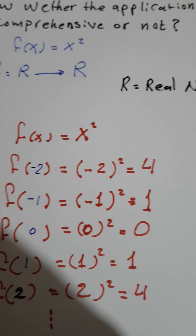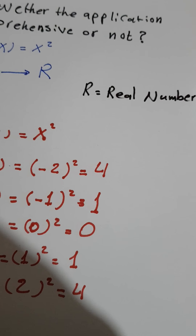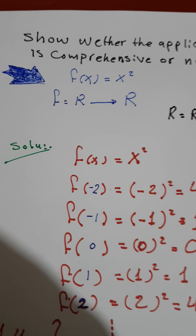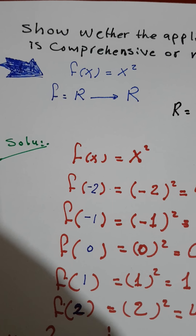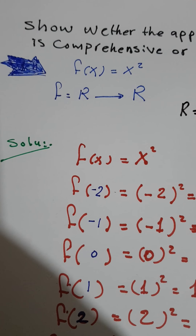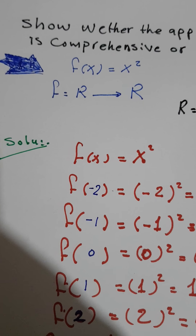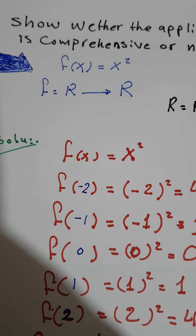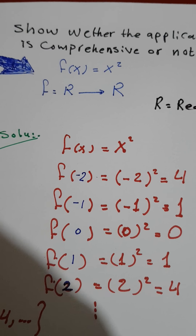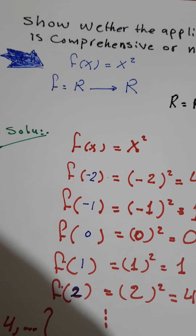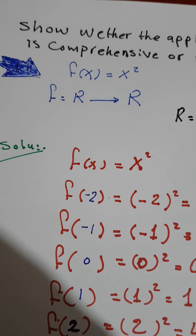ℝ is the set of real numbers, which includes negative numbers, zero, and positive numbers. This is different from the natural numbers ℕ, which contains only zero and positive numbers, without negative numbers.